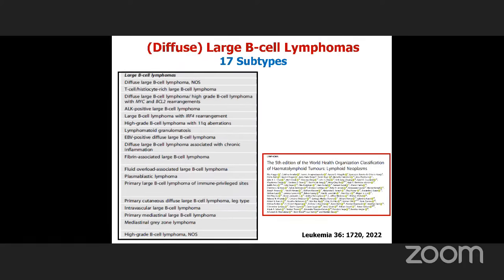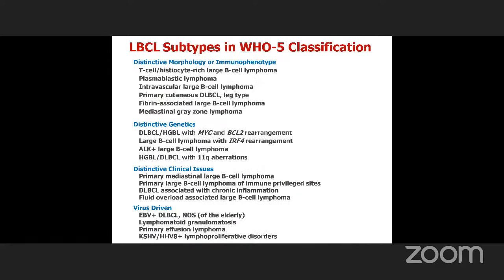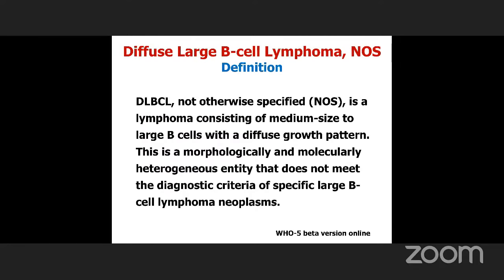Here's a picture of large B-cell lymphomas in the WHO classification. I put the word 'diffuse' in parentheses because it's not required for every one of the 17 different subtypes. I think you can divide these subtypes into four large groups: those with distinctive morphologic or immunophenotypic features, those that are genetically defined, those that are unique biologically and raise important clinical issues like mediastinal large B-cell lymphoma, brain lymphoma, and testis lymphoma, and lastly, lymphomas that are viral-driven. Still about 80% of all cases of diffuse large B-cell lymphoma are not otherwise specified.